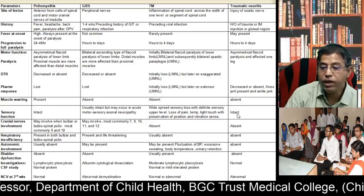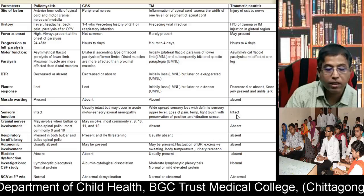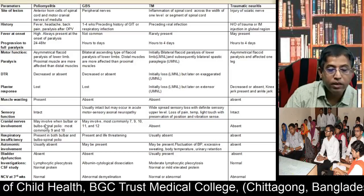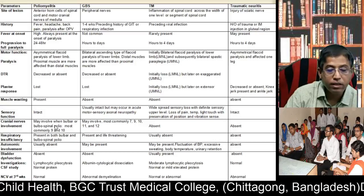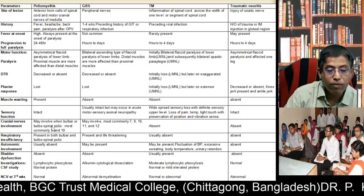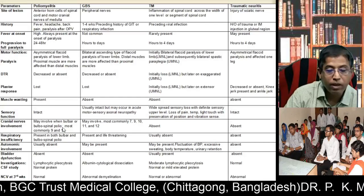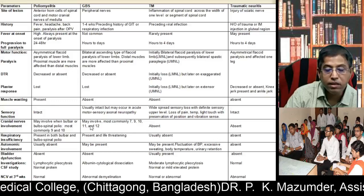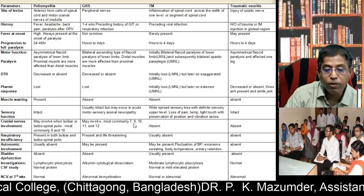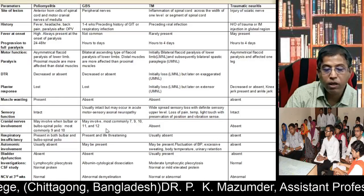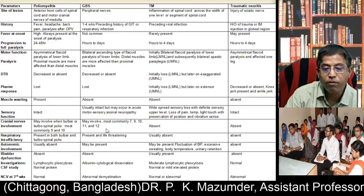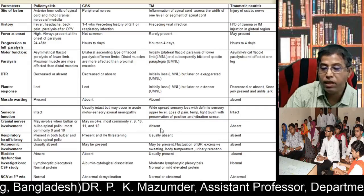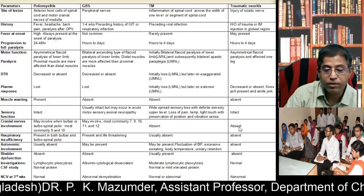In traumatic neuritis, the sensory system is usually intact. Regarding cranial nerve involvement: in poliomyelitis it involves bulbar or bulbospinal polio, most commonly cranial nerves 9 and 10. In GBS, most commonly cranial nerves 7, 9, 10, 11, and 12 are involved. In transverse myelitis, cranial nerve involvement is usually absent. In traumatic neuritis, also absent.